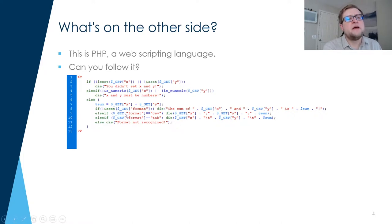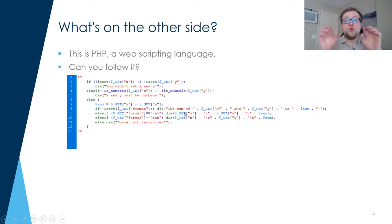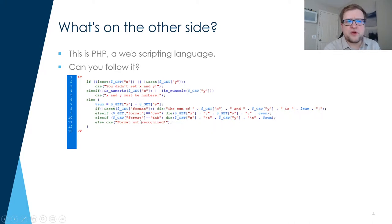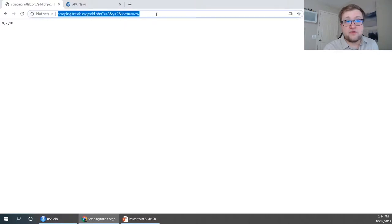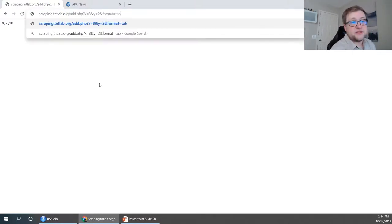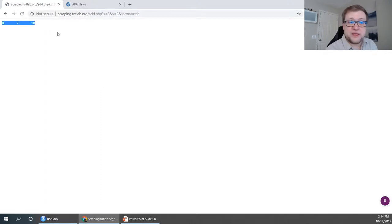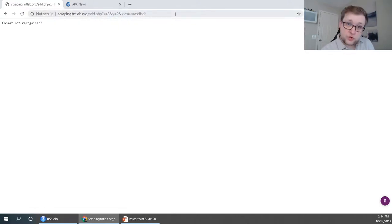Then you see else-if GET format equals CSV, where I literally typed in commas between the values. There's another piece with backslash T's — and as you might guess, those are tabs, creating a tab-delimited file like a TSV or DAT file. At the bottom it says else die 'format not recognized.' Let me change the field from CSV to 'tab' — and that's just what we get: the tab-delimited file. And if we enter some nonsense, we get 'format not recognized,' exactly as the code suggests.